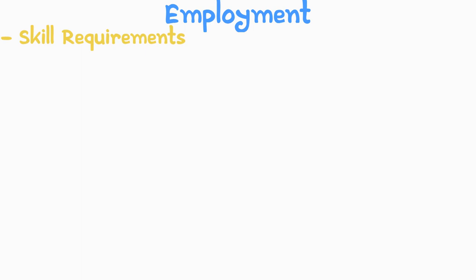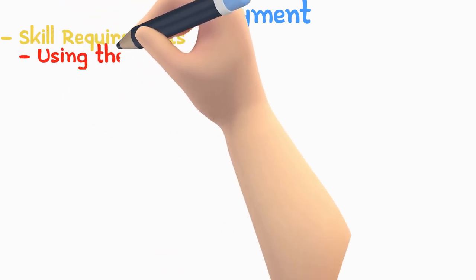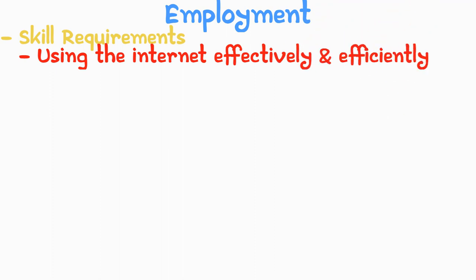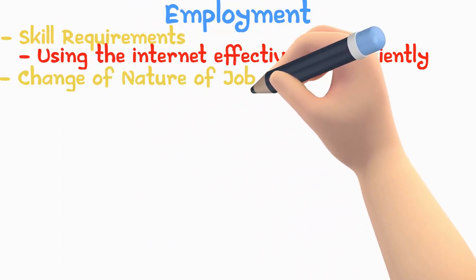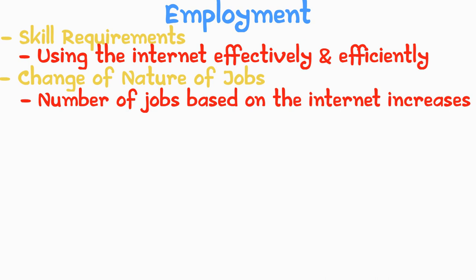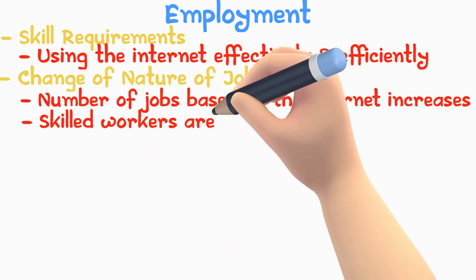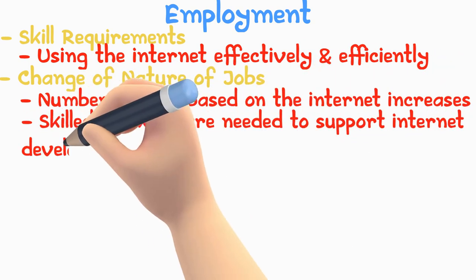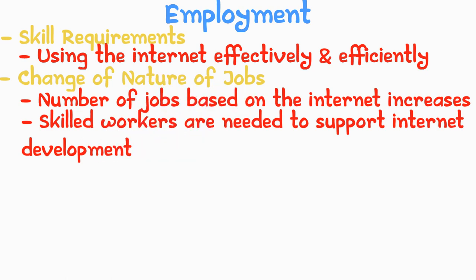Employment. The internet has opened various possibilities of employment. The impact of the internet on individuals when it comes to working can be narrowed down to three things. Skill requirement: using the internet effectively and efficiently is a skill, so employees who were less familiar with using the internet would have to start learning how to work efficiently online. Change of nature of jobs: with the internet becoming more popular, the number of jobs focusing on the internet increases, providing more job opportunities. Skilled workers are needed to support the development of the internet, both in online work and in maintaining the system.